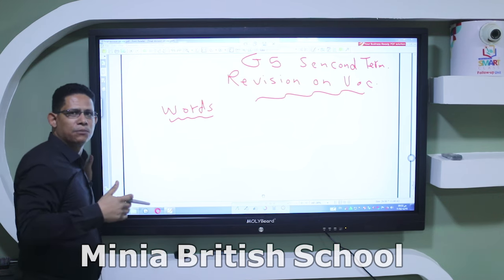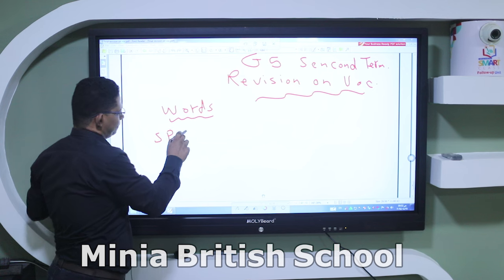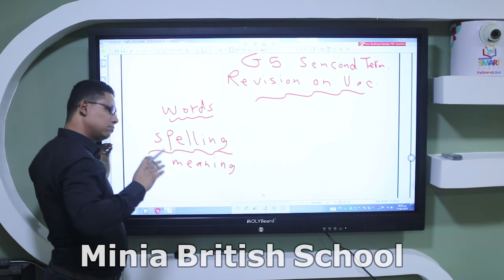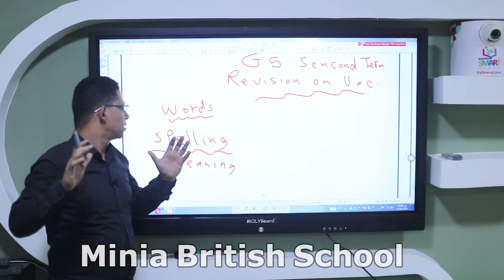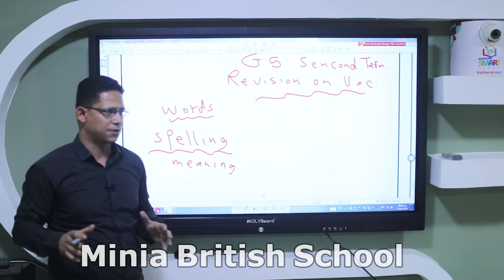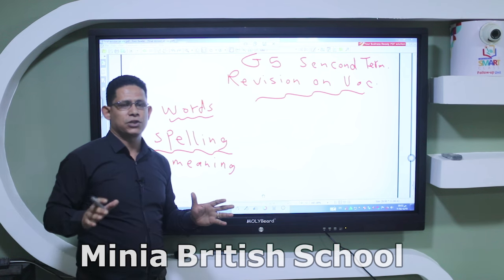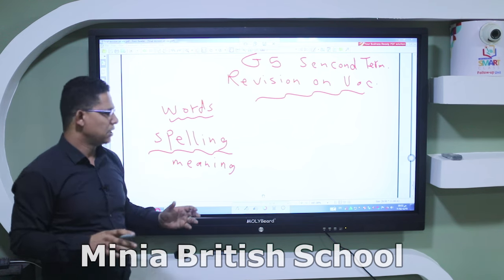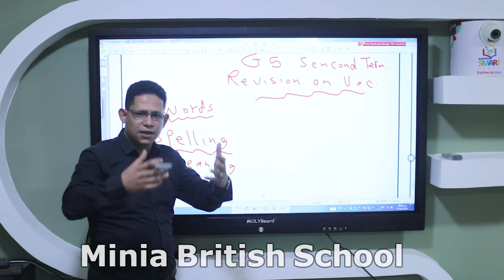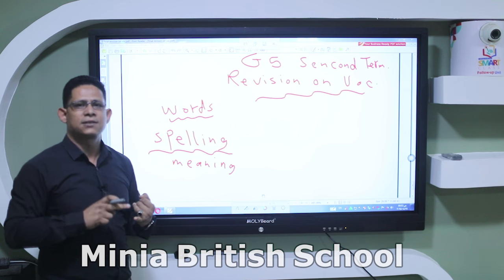How can we deal with words the correct way? Number one, we should know the spelling of the word for dictation, and of course the meaning of the word. How can I make sure I keep the spelling and recall it anytime for dictation in an exam? It's all about repetition, because repetition makes perfect — repetition is the master of all skills. If a word is difficult, repeat it many times by saying or writing it.